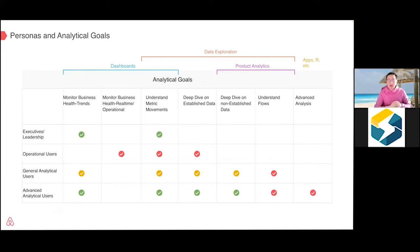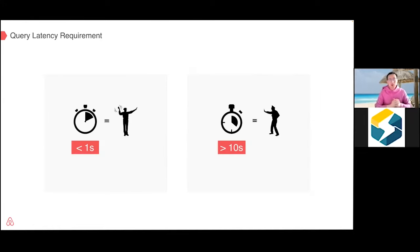The green areas mean we have some kind of good solution right now. The yellow means we need to work on it. The red means we don't have a good solution — before we were using StarRocks. This is another way to look at the BI scenarios.